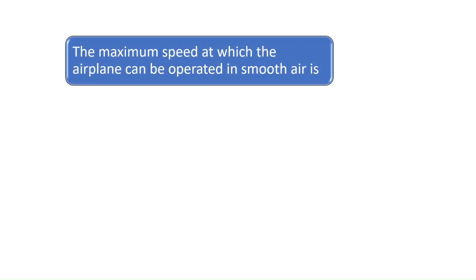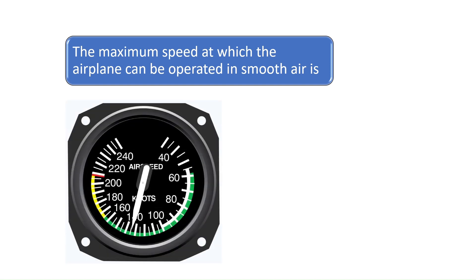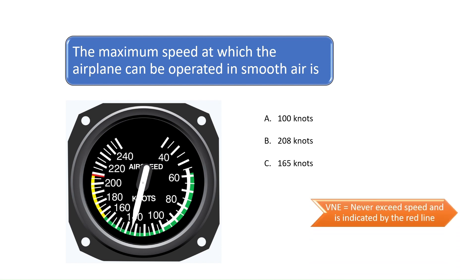Question 7. The maximum speed at which the airplane can be operated in smooth air is. See our previous video, V-Speed Review for Student Pilots in Flight Training, to learn more about V-Speeds or read FAR Part 1. The V-Speed indicates the never-exceed speed and is indicated by the red line on the airspeed indicator. Since the line is just below the 210-knot airspeed indicator, the best answer is 208 knots. The correct answer is B.